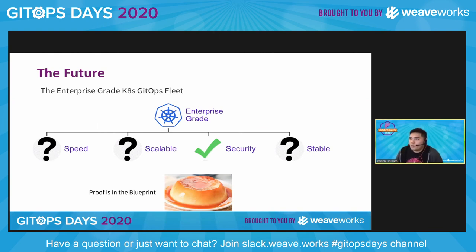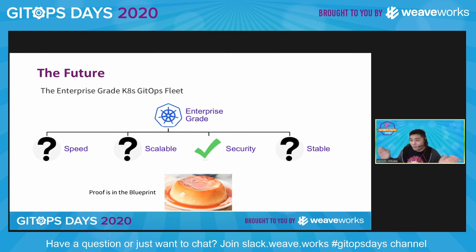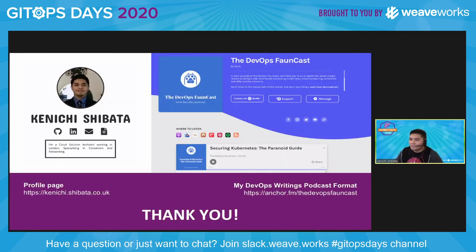One of the things learned over the past year is there is a niche not yet filled: enterprise-grade Kubernetes, or enterprise-grade GitOps fleet. In this specific use case, we solve one criteria of that enterprise requirement, which is security — security by compliance, governance, and audit. That's putting security first before you even start talking about speed, scalability, and stability. The blueprints are your modules, and your modules are your clusters. Thank you very much.